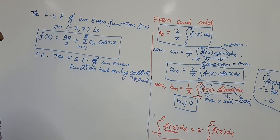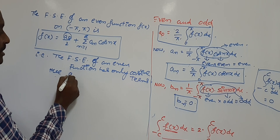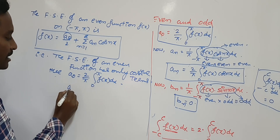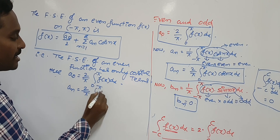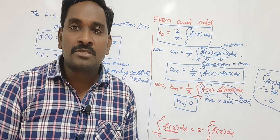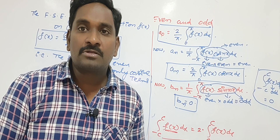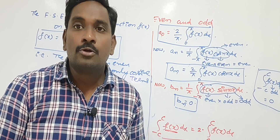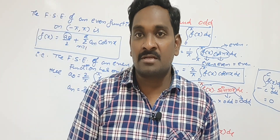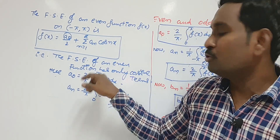So a₀ = (2/π)·∫₀^π f(x) dx and aₙ = (2/π)·∫₀^π f(x)·cos(nx) dx. We can directly apply these two formulas. If a function is defined on (-π, +π), don't find a₀, aₙ, bₙ blindly — check whether it is even or odd. If it is even, bₙ automatically becomes 0 and it is enough to find a₀ and aₙ using these new formulas.